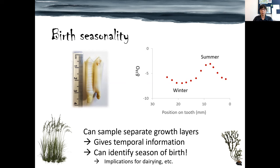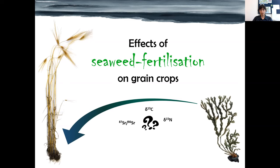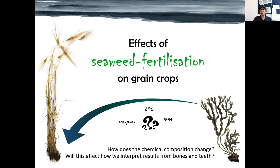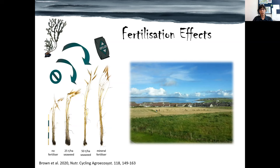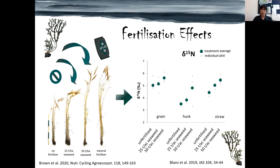Moving on from animals to plants — and sticking with seaweed — I also wanted to look at how fertilisation of terrestrial crops can affect crop isotope ratios. How does fertilisation with seaweed affect the composition of the crop, and how does this affect how we interpret dietary studies? I did a field trial on the Orkney Islands where we fertilised a field of bear barley — an old barley landrace still cultivated on Orkney — with seaweed, following traditional methods based on historical documents. Fertilisation greatly increased the size of the barley plants, and we found significant differences in the isotopic and chemical composition of the crops, with nitrogen stable isotope ratios being significantly higher in grains, husks, and straw.